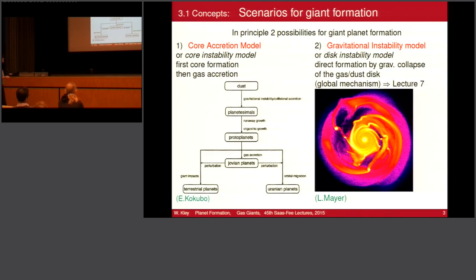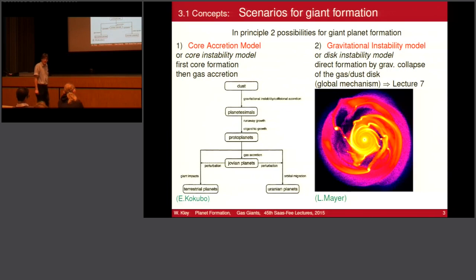Exactly the way you form terrestrial planets, you form the cores of Jupiter-type planets in the same manner, only further out. We have seen the isolation mass at the distance of Jupiter is about 10 Earth masses for typical parameters of the solar nebula. So first you form the core, and then you rapidly accrete gas onto the core. We go from dust, planetesimals, protoplanets, to Jovian-type planets. Depending on the amount of gas available, you can form Jupiter-mass planets, or only Uranus-mass objects, or remain a terrestrial planet.